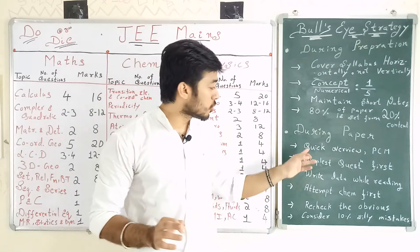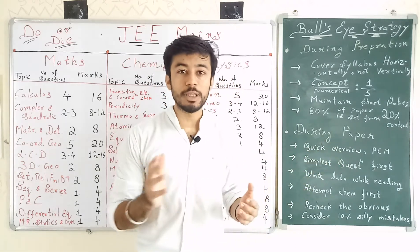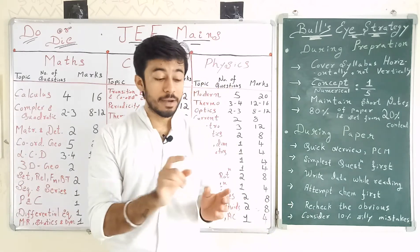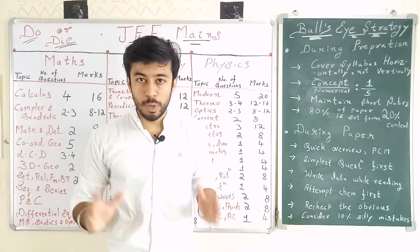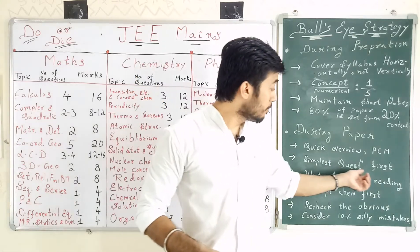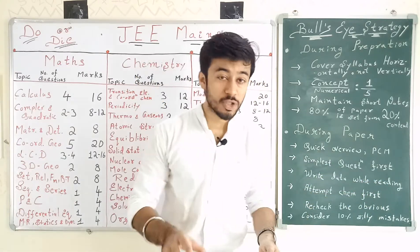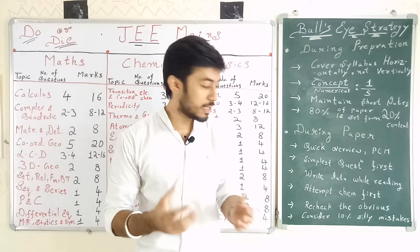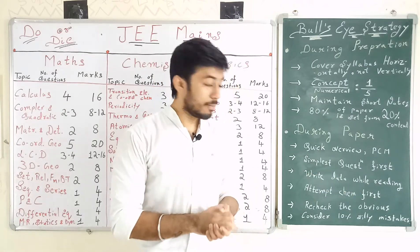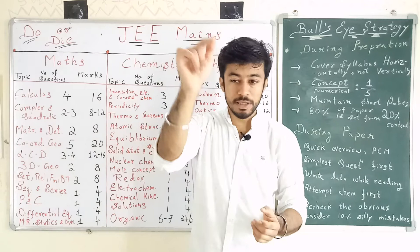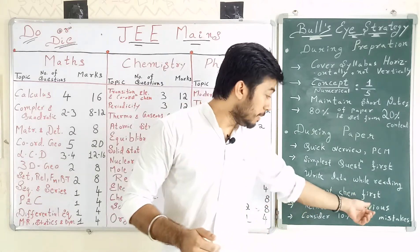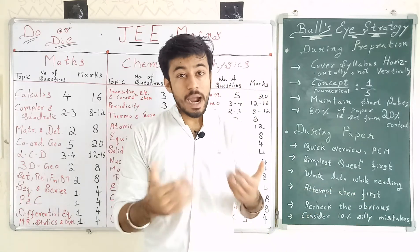During the paper, do a quick overview of PCM — whenever you solve a test or write for JEE, give at least five minutes to read the whole paper. Decide which questions to attempt first. Go for the simplest questions first — that will give you marks and boost your confidence. Also, write down the given data as you read a numerical to save time.